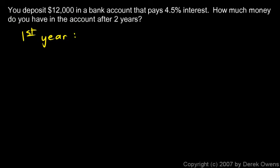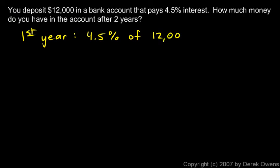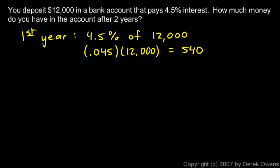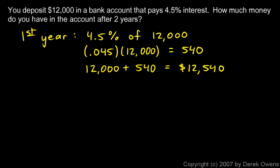The first year, you're earning four and a half percent on the $12,000. We need to calculate four and a half percent of twelve thousand, which is 0.045 times twelve thousand, and that comes out to $540. At the end of the first year, you have your original twelve thousand plus the five hundred and forty, which equals twelve thousand five hundred and forty dollars.